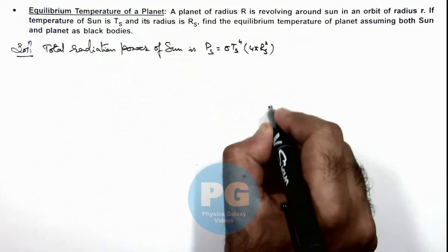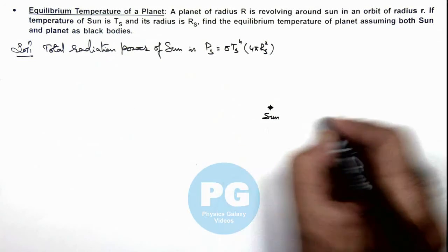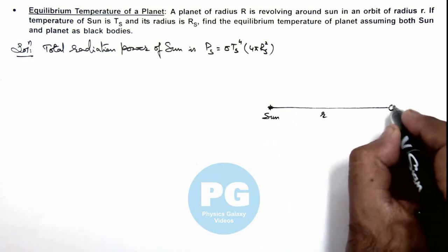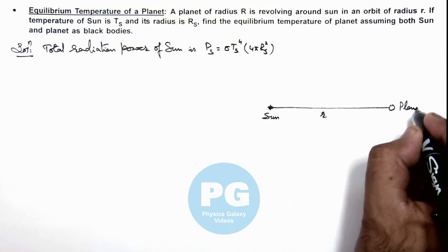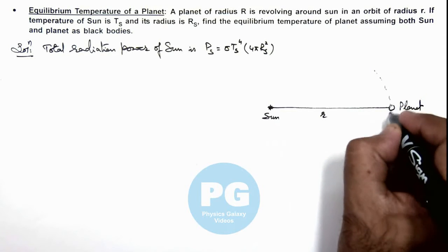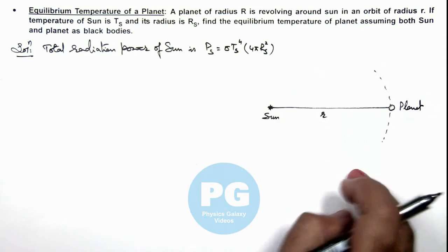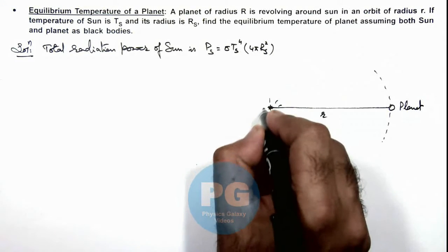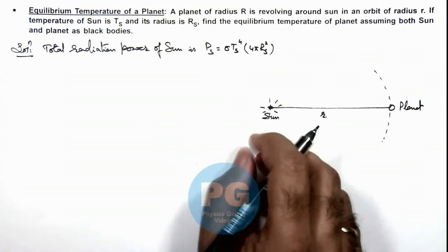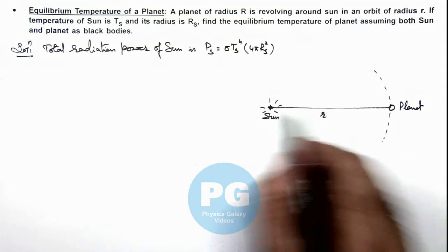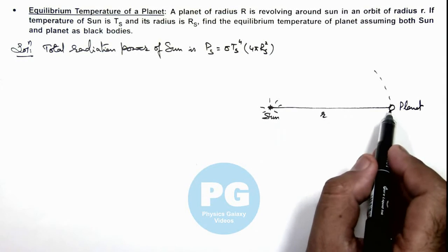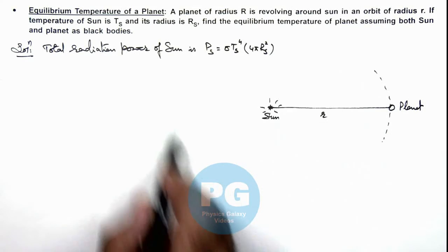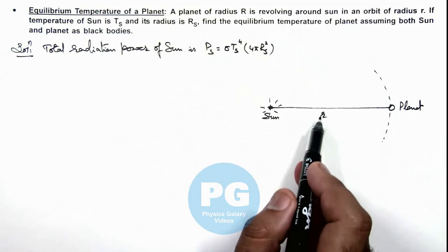Now, if we consider this is the sun, and at a distance R this is the planet, which is revolving around the sun in an orbit of radius R. The power which the sun is emitting will be distributed over the whole region, and on the planet the amount of power falling will be of the intensity incident on a spherical region of area 4 pi R squared.